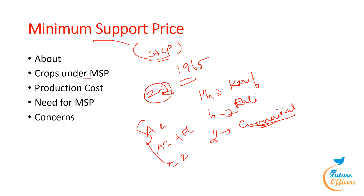This is particularly crucial in states where agriculture is a major source of livelihood. However, concerns with MSP include limited extent — officially announced for 23 crops but in practice only rice and wheat are extensively procured under the National Food Security Act. There are also issues of ineffective implementation, skewed crop dominance, middleman dependency, and a significant burden on government for procuring and maintaining buffer stocks, diverting resources from other agricultural or rural development programs.